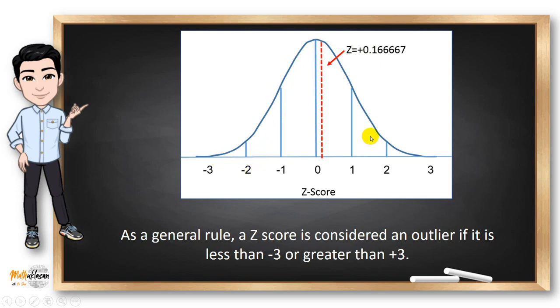As a general rule, a z-score is considered an outlier if it is less than negative 3 or greater than positive 3. Because if you have values greater than positive 3, it's on the extreme part of the right side of the normal distribution. While if it's less than negative 3, it's on the left most part of the normal distribution.